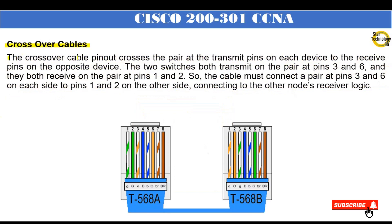Crossover cables: the crossover cable pin-out crosses the pair at the transmit pins on each device to the receive pins on the opposite device. The two switches both transmit on the pair at pins 3 and 6, and both receive on the pair at pins 1 and 2. So the cable must connect the pair at pins 3 and 6 on each side to pins 1 and 2 on the other side. In a crossover cable, one side has a different arrangement of wires — the first pin is white-green and the second is green — while the other side has the first pin as white-orange and the second pin as orange.